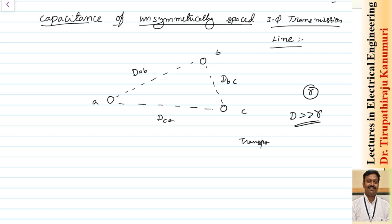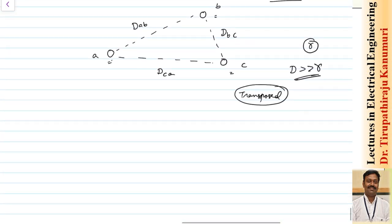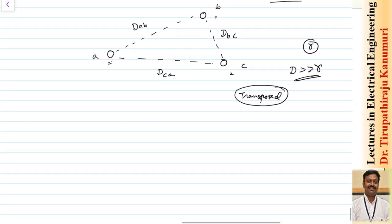It is also assumed that this transmission line is perfectly transposed. Transposition means each conductor will occupy each and every position at least once. Initially A is at position one, B at position two, C at position three. After one-third of the distance, A moves to B's position, B moves to C's position, and C moves to A's position. This divides the transmission line into three sections.